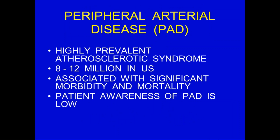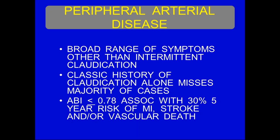This is a highly prevalent disease. It affects almost 12 million people in the US every year. It's associated with significant morbidity and mortality. Patient awareness — and physician awareness of this — is often quite low. There's a broad range of symptoms; the most common is going to be claudication. However, there are other symptoms from cold feet, tingling, etc. An ABI less than 0.78 is associated with about a 30% five-year risk of MI, stroke, and/or vascular death. Vascular disease does not affect one area — just the carotids or coronaries — it affects typically all the vessels throughout the body.